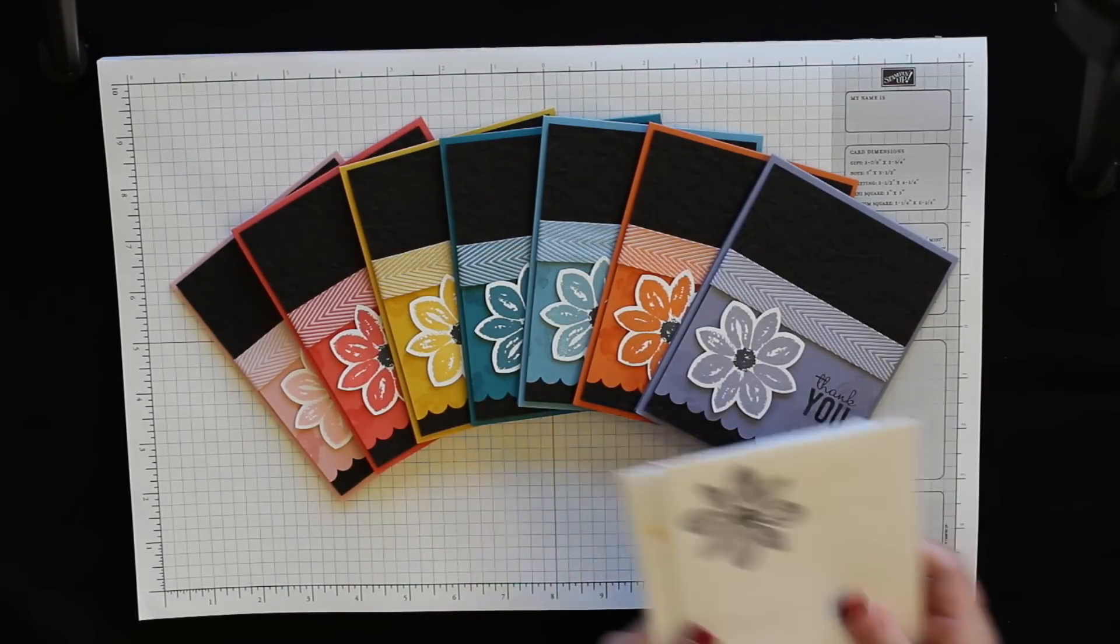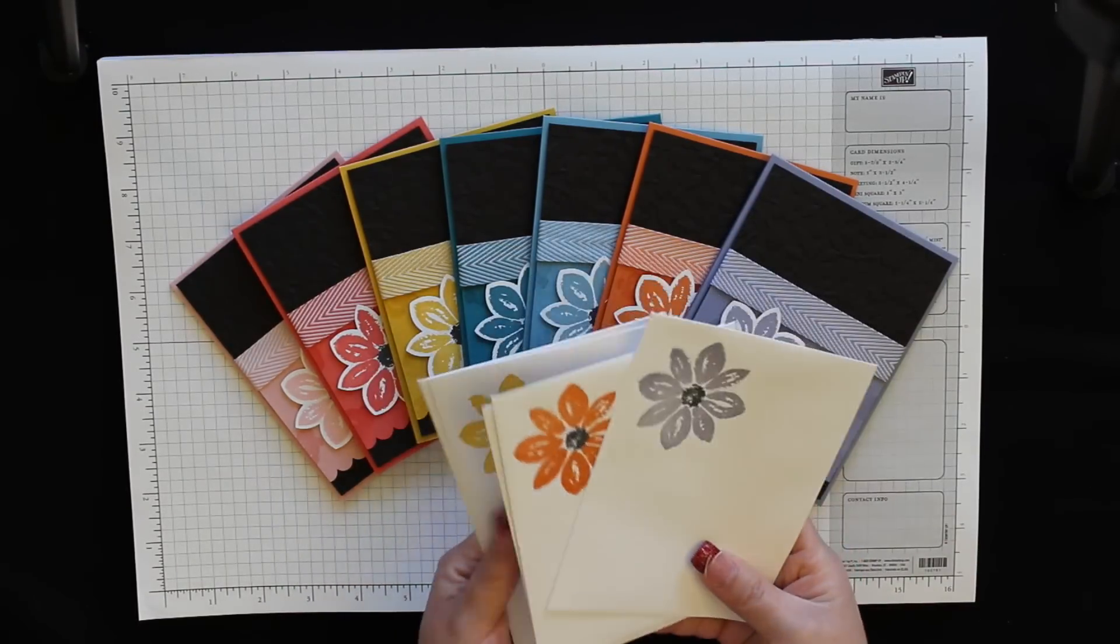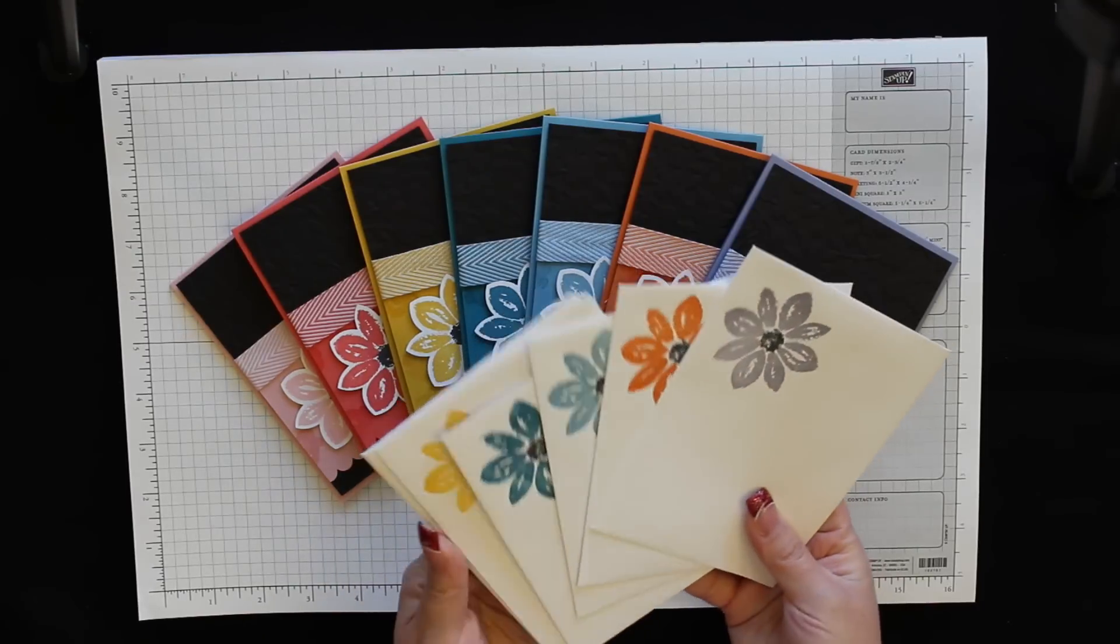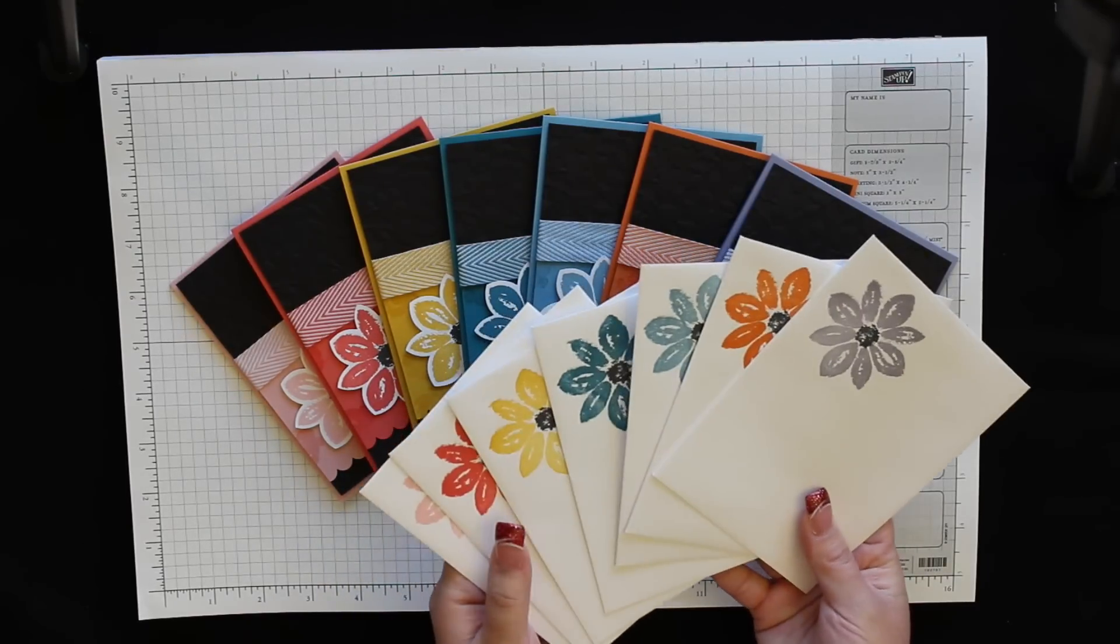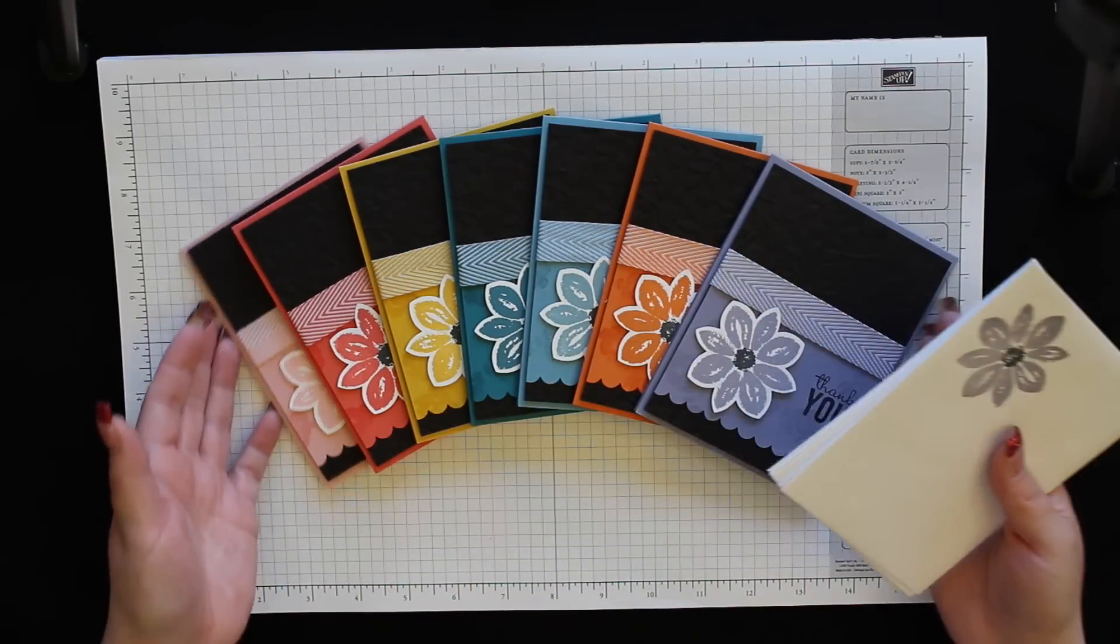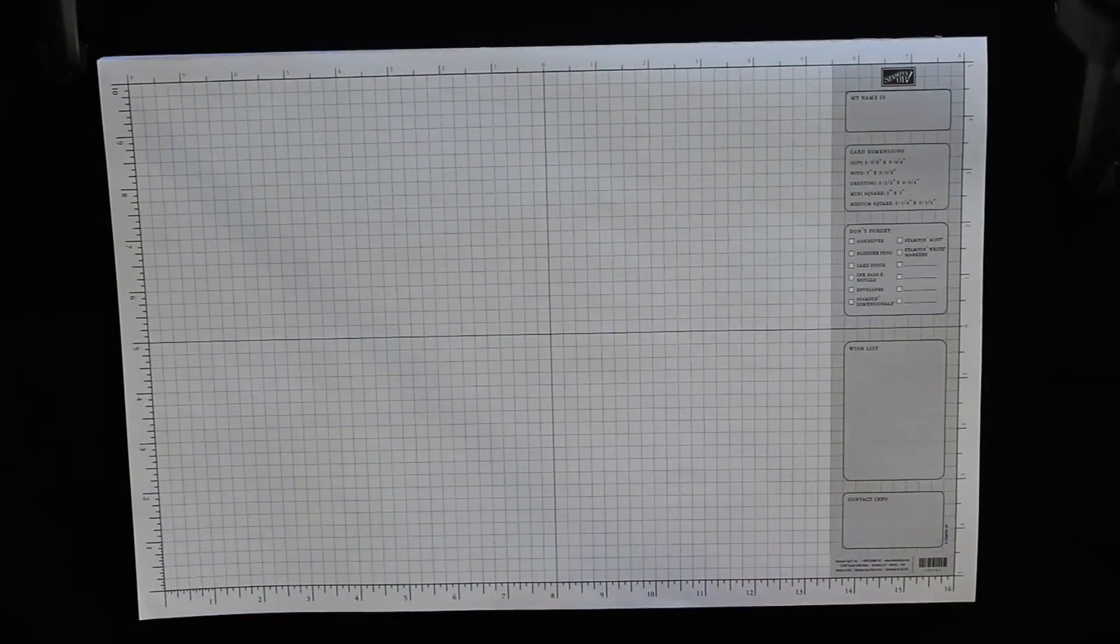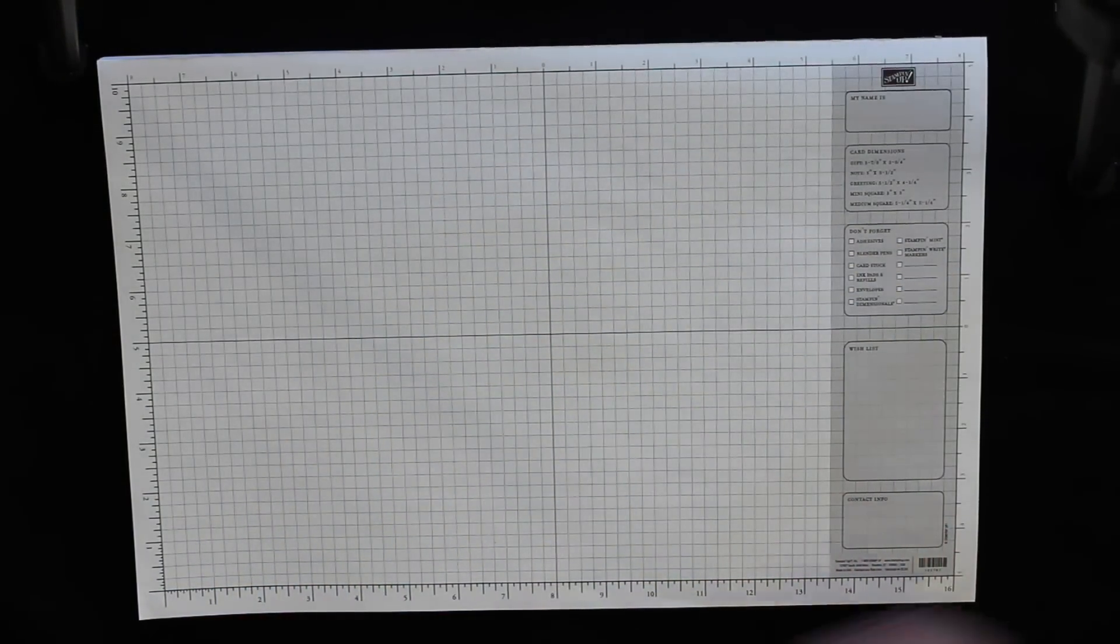The other thing that I did was I also stamped envelopes and I just put that same flower in the bottom corner of all the envelopes so they'd all coordinate together. The one color I didn't make was Cherry Cobbler and that's my favorite color, so I wanted to show you how to make that with the Cherry Cobbler.